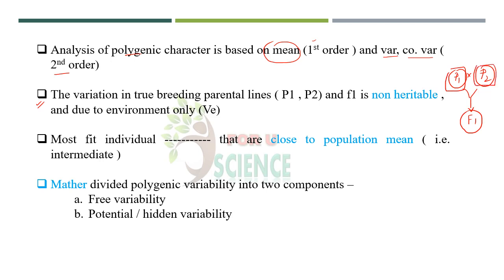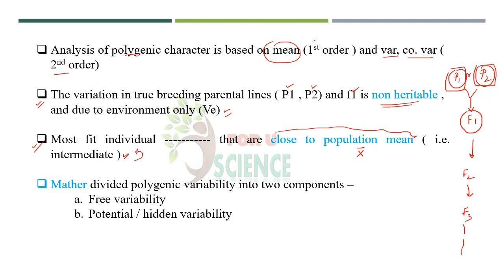That means if we want to select for any variations, we have to go to further subsequent generations like F2 and F3 and so on. The most fit individuals are those which are close to the population mean — that is x-bar — and this is the intermediate type. We call those characters or those individuals the most fit individuals.